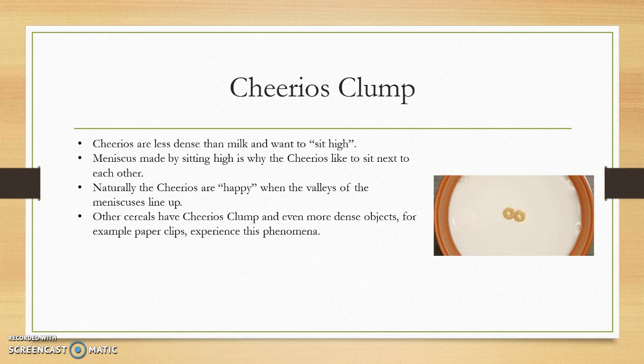When Cheerios sit up high, they create a meniscus — a valley — and these meniscus valleys pull the Cheerios closer together. If they're within a certain distance, they'll be pulled together and settle into this happy equilibrium point in the valleys. So Cheerios in a water-like substance are attracted because of the meniscus formed by them sitting high in the liquid.